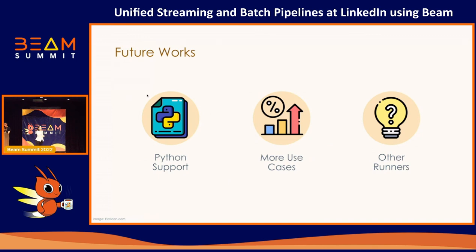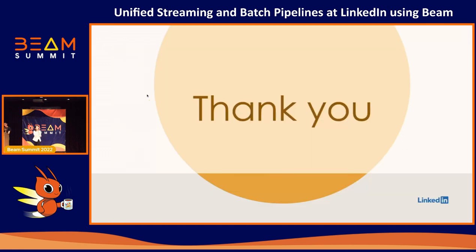Finally, we want to share some of our future work. The first is Python support — currently all of our use cases are written in Java, but in machine learning areas engineers are more familiar with Python, so Python support is one area we want to investigate. Also, so far all of our use cases are backfilling jobs, but we are actively working on onboarding other use cases too. Last but not least, we want to investigate more runners — SAMSHA runner is currently the only one we use for streaming, and Spark runner is the only one for batch, so we want to explore other runners to expand our unified pipeline. That's all. Thank you for your time and attention.